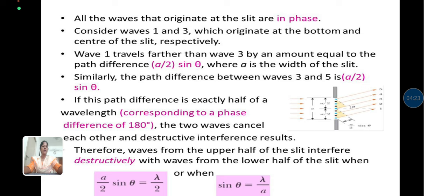If this path difference is exactly half of a wavelength, the two waves cancel each other and destructive interference results. Therefore, waves from the upper half of the slit interfere destructively with waves from the lower half when a/2 sin theta equals lambda/2.